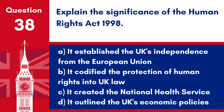Question 38: Explain the significance of the Human Rights Act 1998. a. It established the UK's independence from the European Union. b. It codified the protection of human rights into UK law. c. It created the National Health Service. d. It outlined the UK's economic policies. Answer: b. It codified the protection of human rights into UK law. The Human Rights Act 1998 is a significant piece of legislation that incorporated the rights contained in the European Convention on Human Rights into UK law.